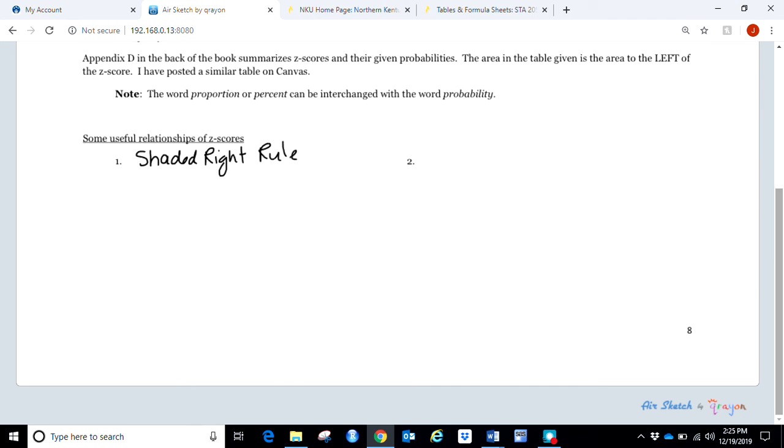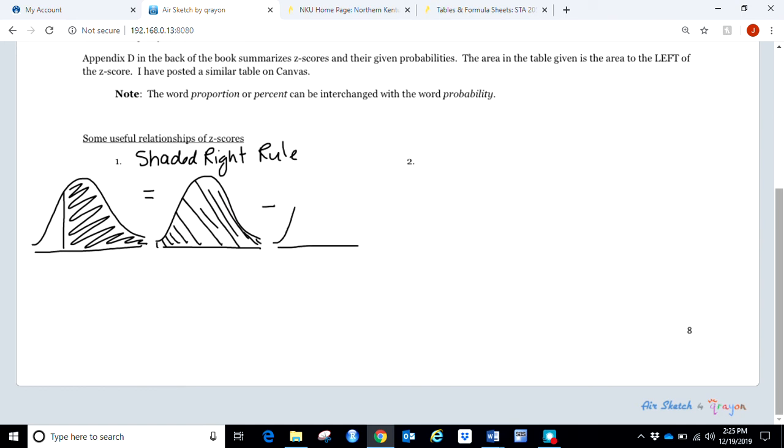So first we're going to understand this through some picture math. Whenever I'm shaded right, it does not matter where my value is along the bottom. All that's going to matter is that I'm shaded to the right. So what I can do to find that probability, and keeping in mind that I have to use the table I have which always reads to the left, is I can start by taking everything and I can subtract off what I don't want.